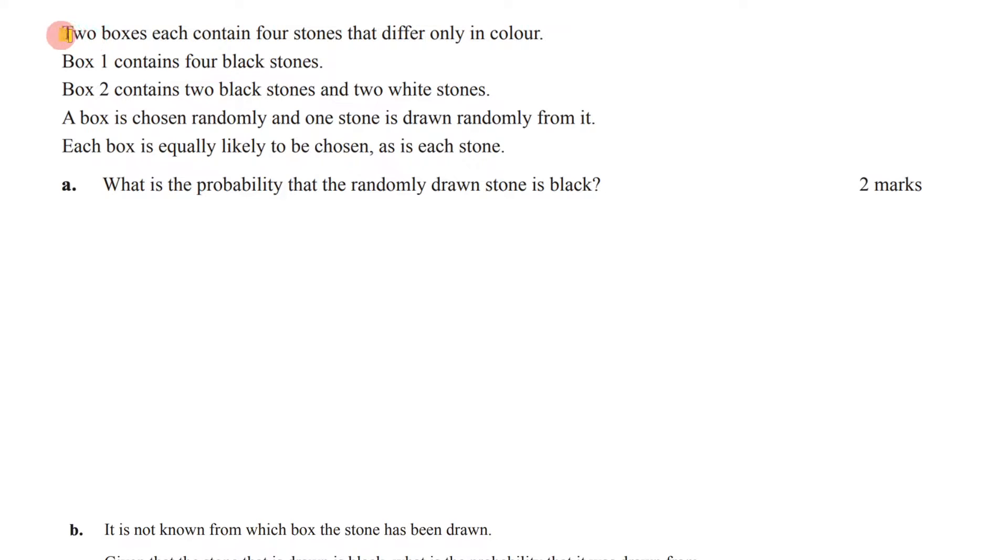Let's read this question before us. Two boxes each contain four stones that differ only in colour. Box one contains four black stones. Box two contains two black stones and two white stones. A box is chosen randomly, and one stone is drawn randomly from it. Each box is equally likely to be chosen, as is each stone. What is the probability that the randomly drawn stone is black?